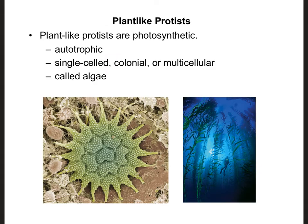Our next category of protists are plant-like protists. In order to be considered a plant-like protist, they have to be photosynthetic, which means they're autotrophic. These guys can be single-celled, they can live in colonies, or they can actually be multicellular. Algae is actually a protist — it's not considered a plant because it doesn't have specialized tissues. Same with kelp. Kelp and algae are examples of protists that are multicellular. They're considered plant-like because they do photosynthesis, but they're not considered part of the plant kingdom.